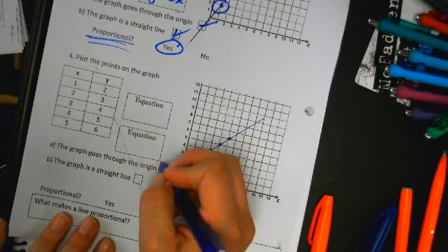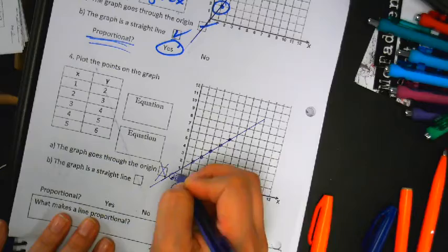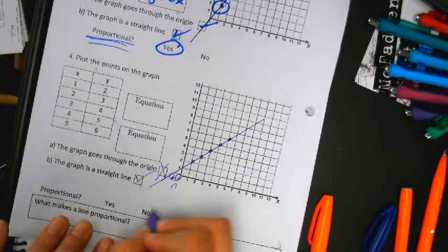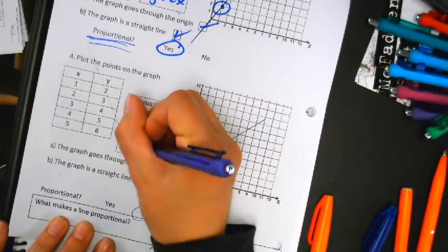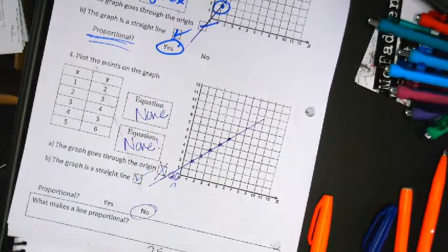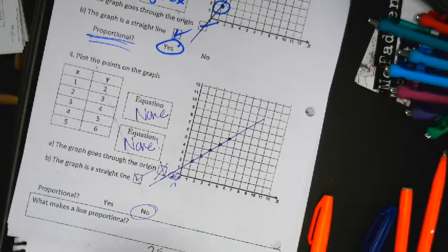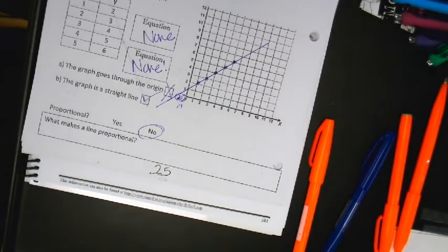Does not go through the origin. Sad face. It's a really weird sad face. Straight line? Yes. Proportional? No. So, there is no equation. None. None. Even though I asked for the equation twice. Now, not yet. Because look, there's a box right here. Boxes are super important.